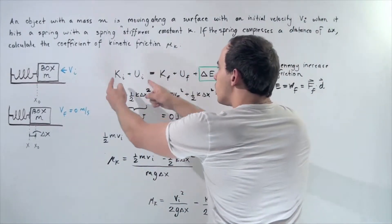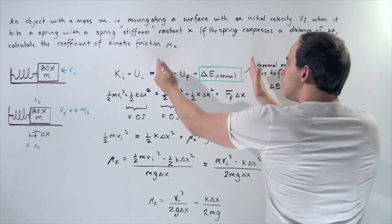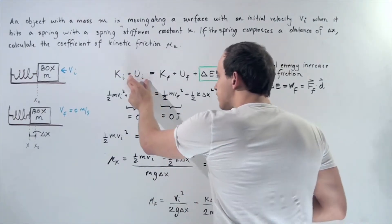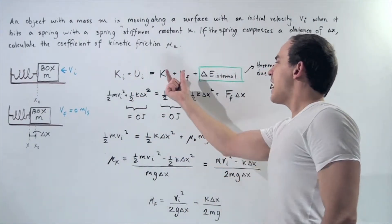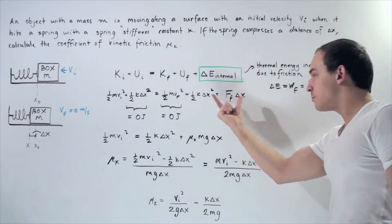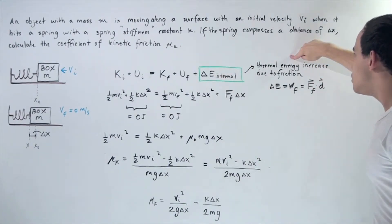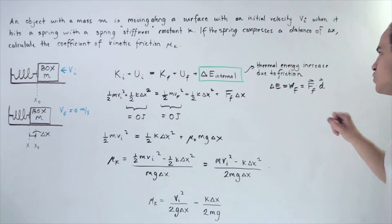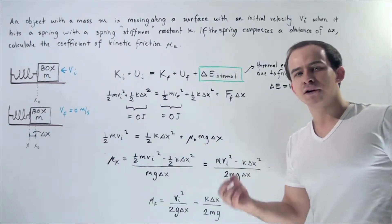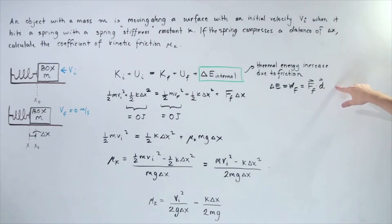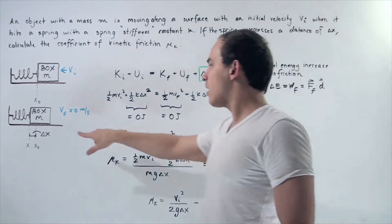The sum of all the energies initially is equal to the sum of all the energies in the final system. Initially, we have kinetic energy and elastic potential energy. In the final system, we have final kinetic energy, final elastic potential energy, and the change in thermal energy. Thermal energy increases because of friction — the change in thermal energy equals the work done by the frictional force, which equals the average frictional force multiplied by displacement, which is simply our change in x.